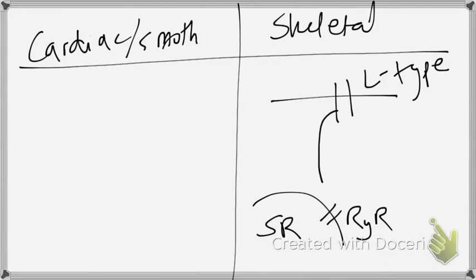So in skeletal muscles, the difference is that this L-type calcium channel and this RYR calcium channel are directly attached to each other. It's sort of like hooks, this hook and this hook, they're attached to each other. There is no space in between them.